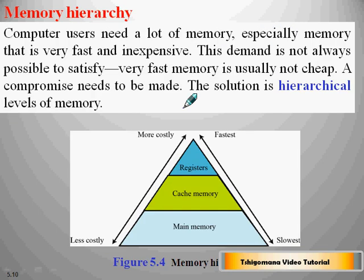Computer users need a lot of memory, especially memory that is fast and inexpensive, but this demand is not always possible to satisfy because very fast memory is very expensive. Therefore, computer experts made a compromise and developed a hierarchy of built-in memory levels: registers, cache memory, and main memory (RAM).